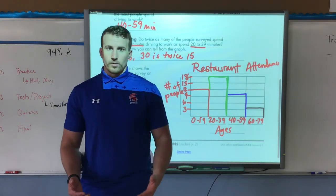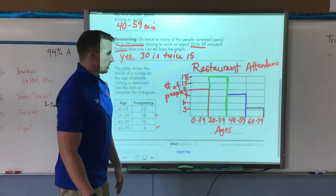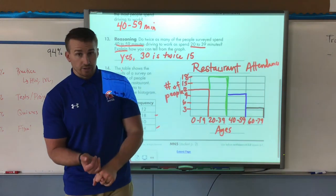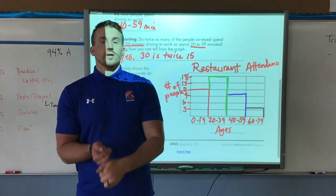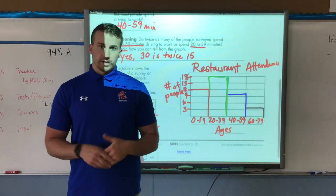Again, I can color the bars in if I want to. I don't have to. But there they are, all four of the age ranges. So that's it. That's histograms. You should be able to create a histogram and analyze and interpret histograms to answer questions. We'll see you next time.